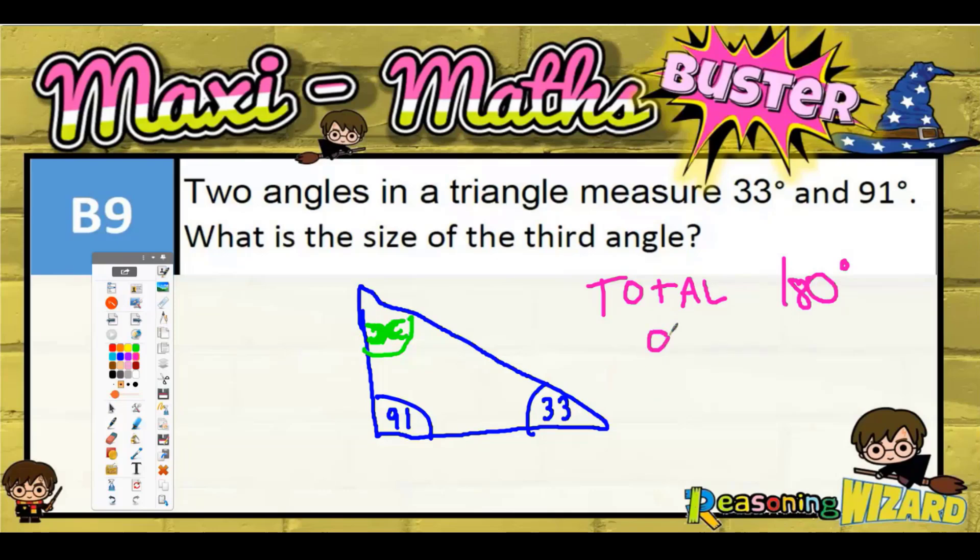So the first thing we're going to do is see what we've got so far. So 91 plus 33 will tell us what we've got so far. 1 plus 3 is 4, 9 plus 3 is 12. So we've got 124 so far. That does not mean that the missing angle x is 124.